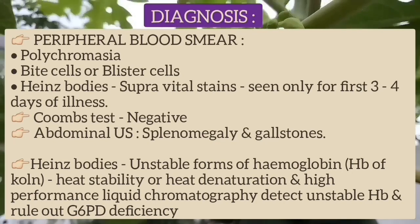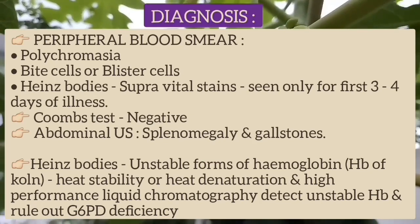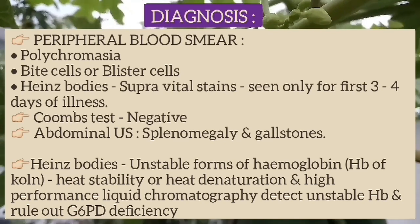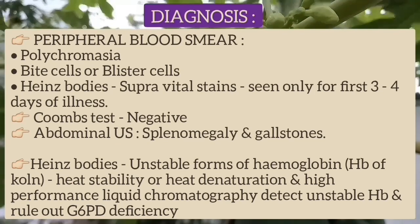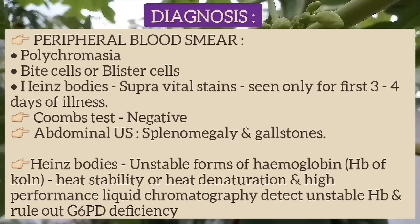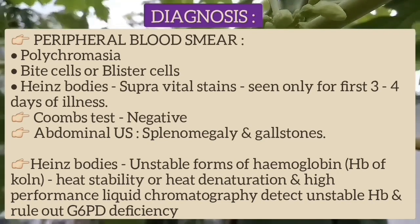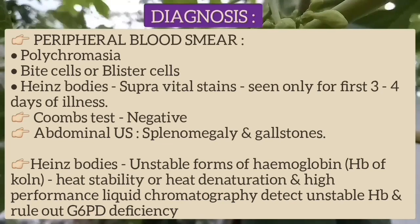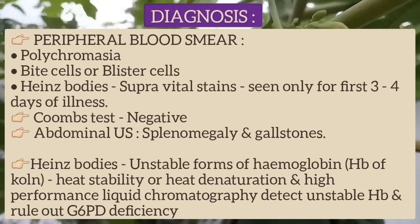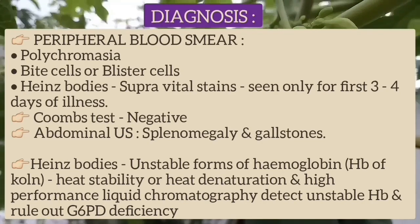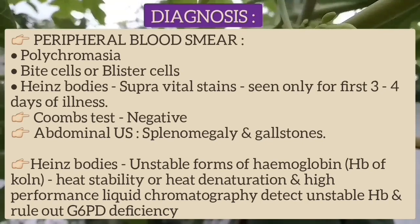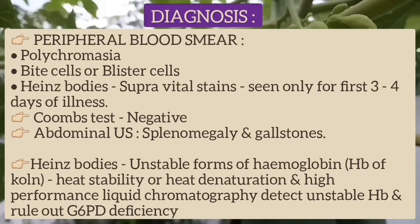With supravital stains, Heinz bodies can be visualized, but cells containing these inclusions are seen only for the first 3 to 4 days of illness because they are rapidly cleared from the blood. In G6PD deficiency, the Coombs test should be done and it is negative, ruling out other immune-mediated anemias. Abdominal ultrasound is helpful for assessing splenomegaly and gallstones in patients with severe chronic hemolysis. Heinz bodies are also seen in patients with unstable forms of hemoglobin; heat stability testing and high-performance liquid chromatography can identify unstable hemoglobin and rule out G6PD deficiency.